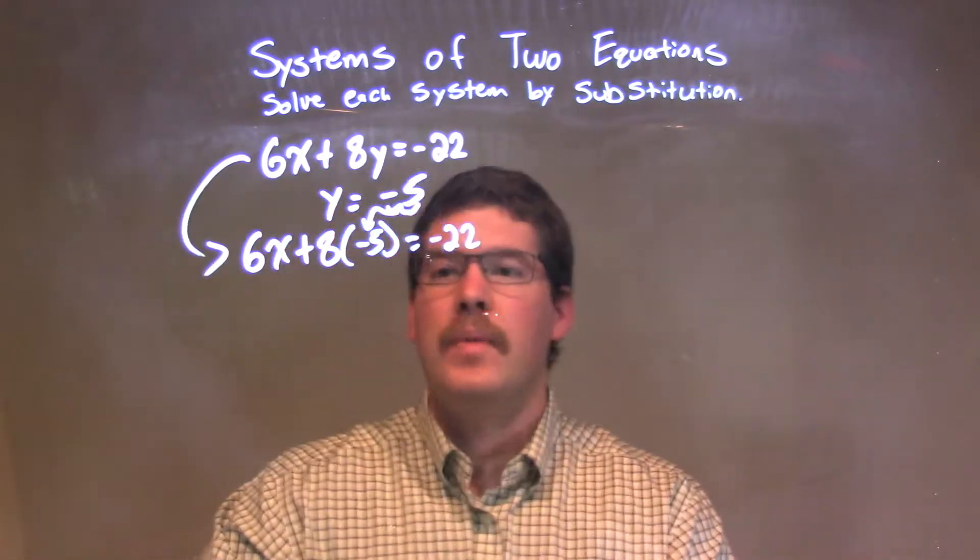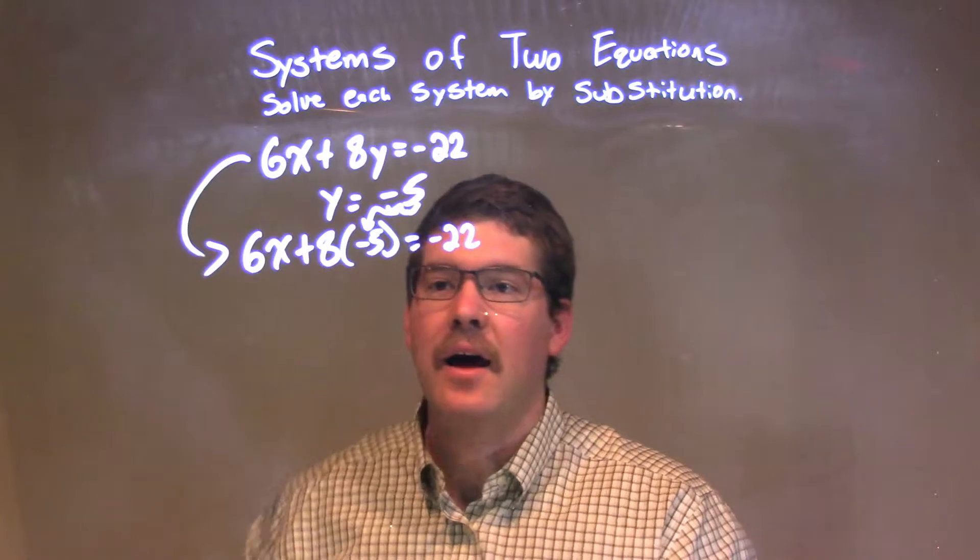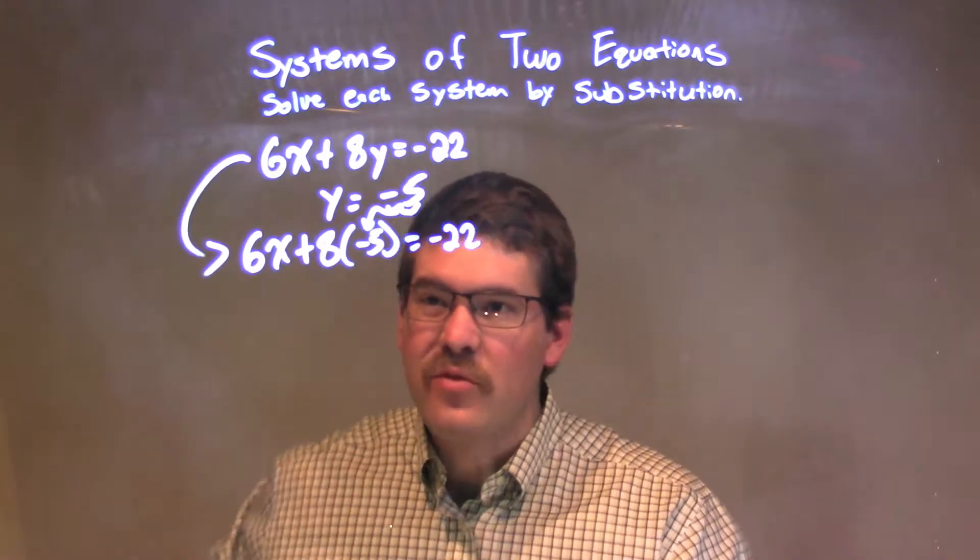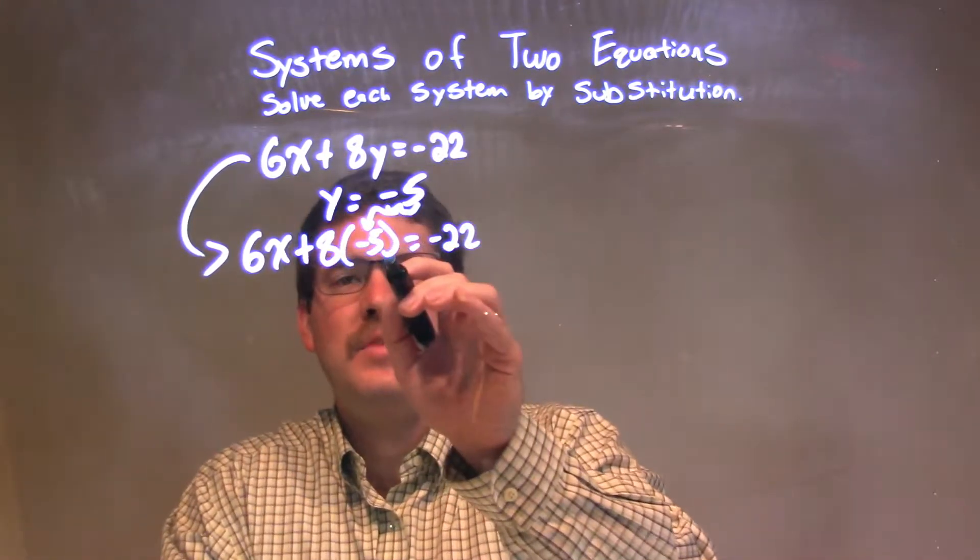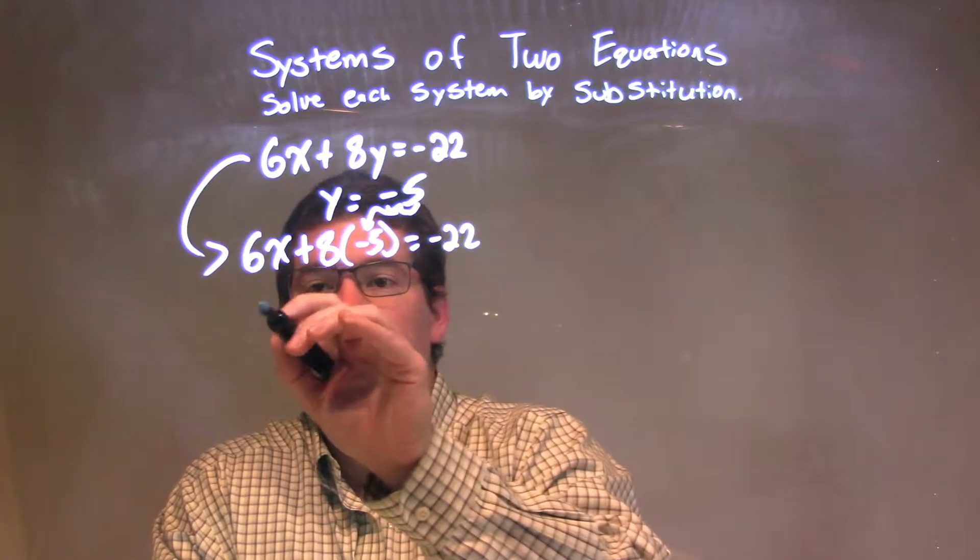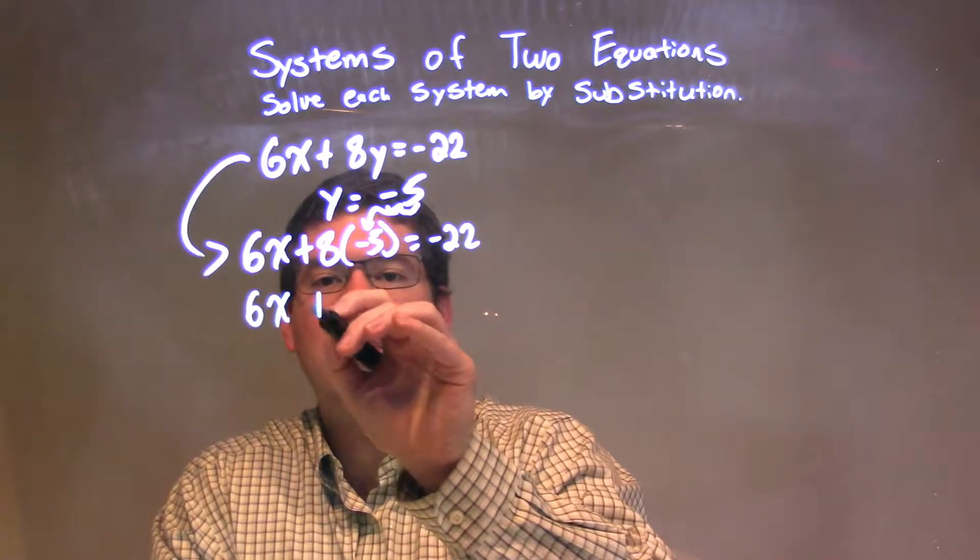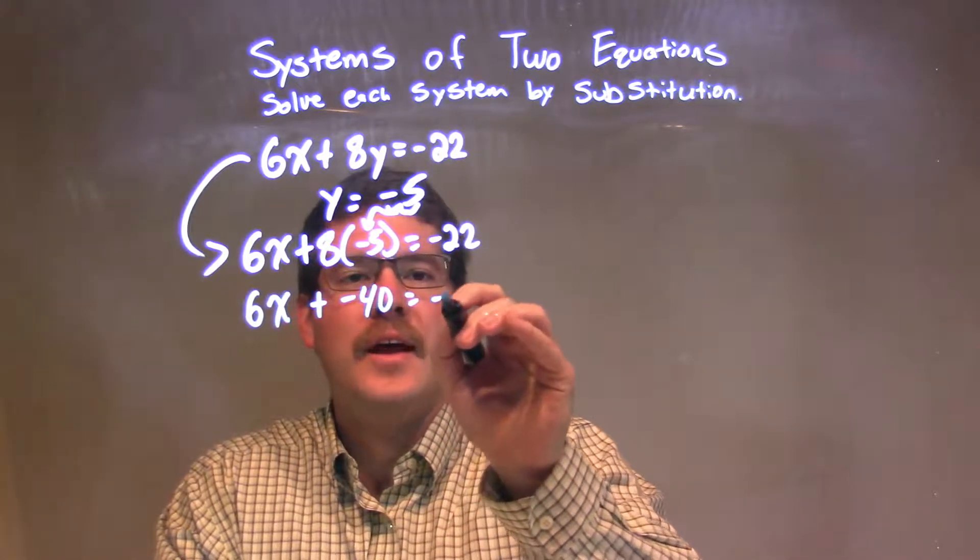From there, I need to simplify trying to get x by itself. 8 times negative 5 is negative 40, so we have 6x plus negative 40 equals negative 22.